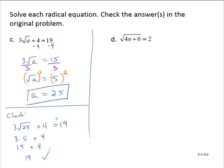Exercise d: the square root of 4n plus 6 equals 2. The radical is isolated. Even though there are multiple terms under the radical, it is isolated, so I can immediately square both sides of this equation, yielding 4n plus 6 equals 4.